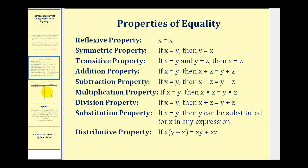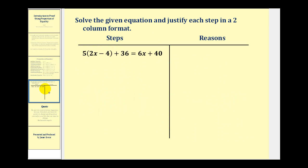Let's take a look at our two-column proof. Here we want to solve the given equation and justify each step in a two-column format. In a two-column proof, we normally have our steps or procedures on the left and our reasons or justifications on the right. To keep things organized, it's helpful to number each step and each reason. Number one would be the given equation, so on the right we'll just say 'given.'